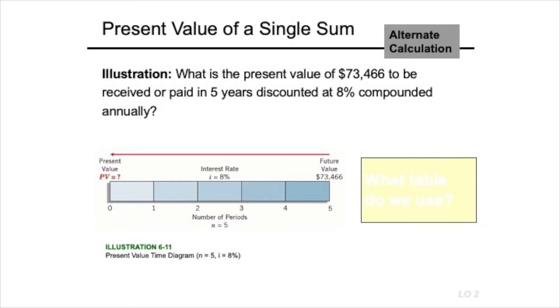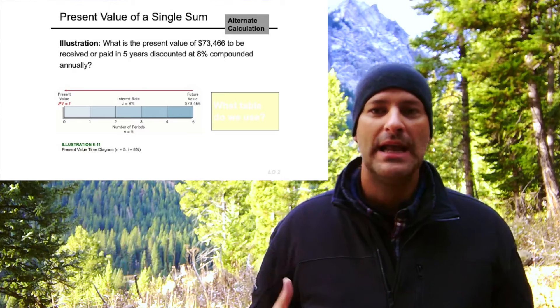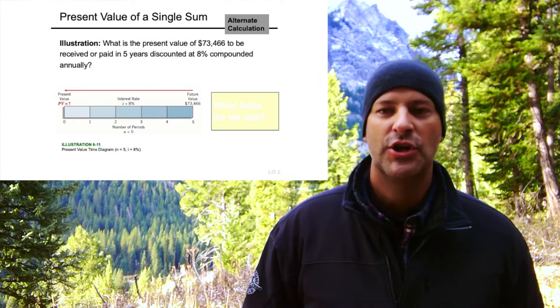So what if we flip this around and we want to figure out not the future value, but the present value — what's the value of something today? Let's take an example where in the future we're going to get $73,466 — just a random number — and we're going to get that in five years. Let's say I want an 8% return on this.